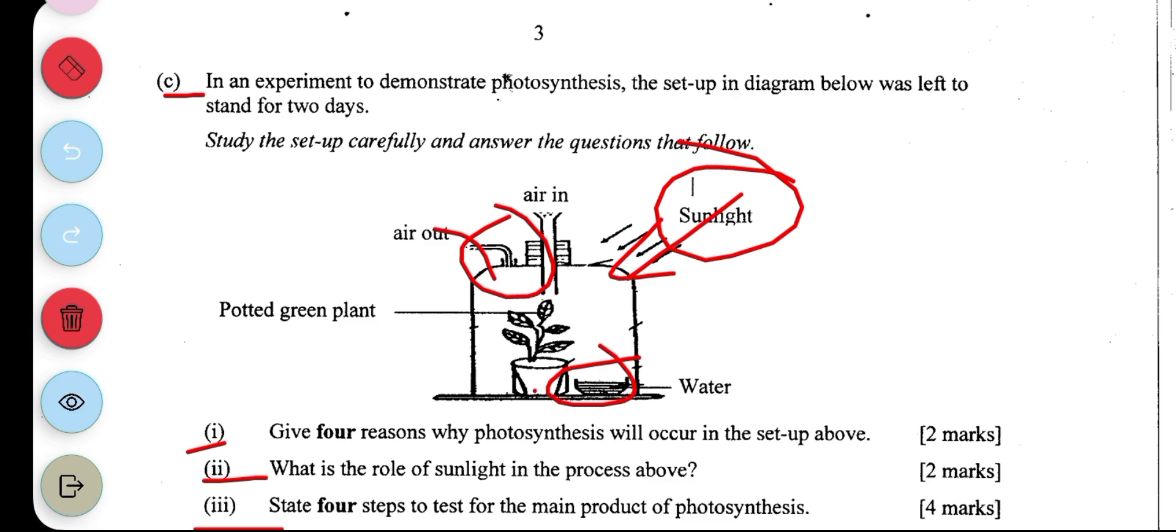The leaf is washed in cold water to soften it, that's three. Then four, a few drops of iodine is added to the leaf. When the leaf turns blue-black, it indicates the presence of starch in the leaf.